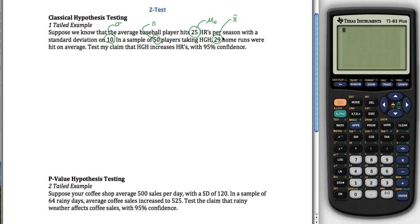The sample average is 29. We'll use X-bar to represent that. What we want to do is test the claim that HGH increases home runs, and we want to have 95% confidence. Alpha is 1 minus our level of confidence, so alpha equals 0.05 in this case.